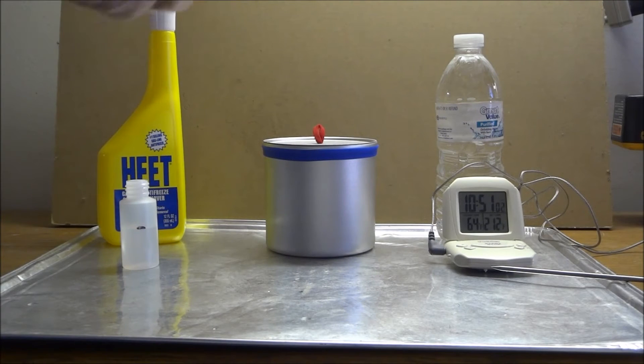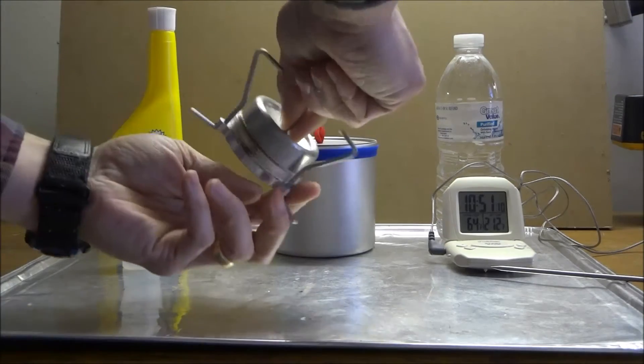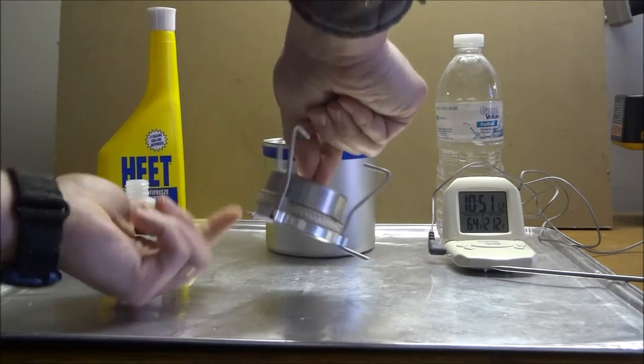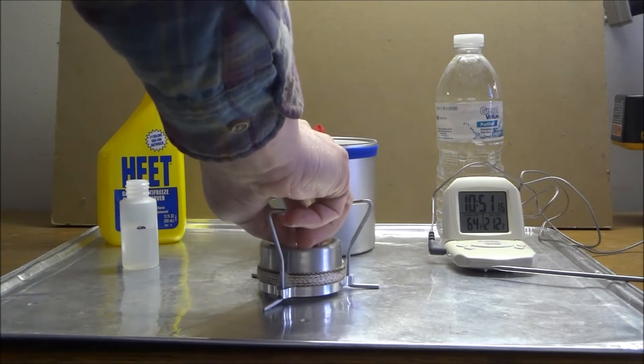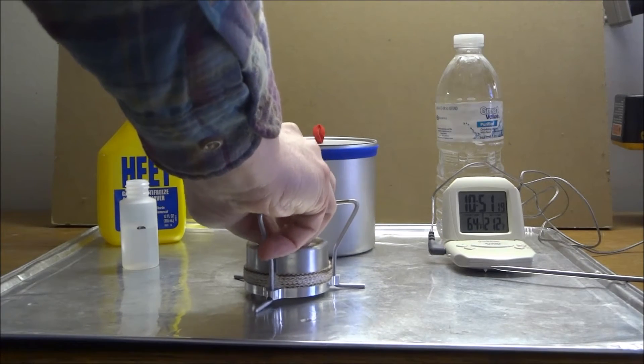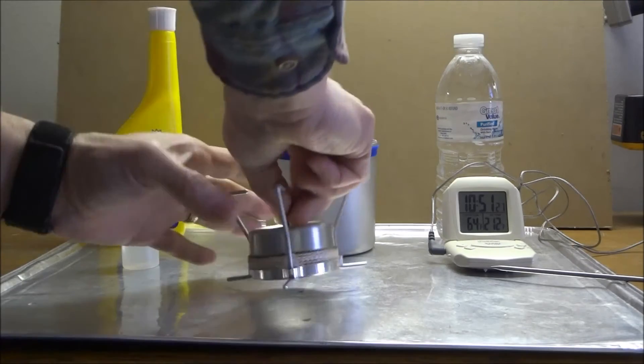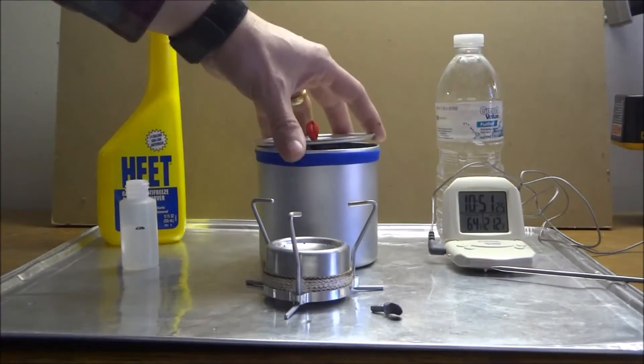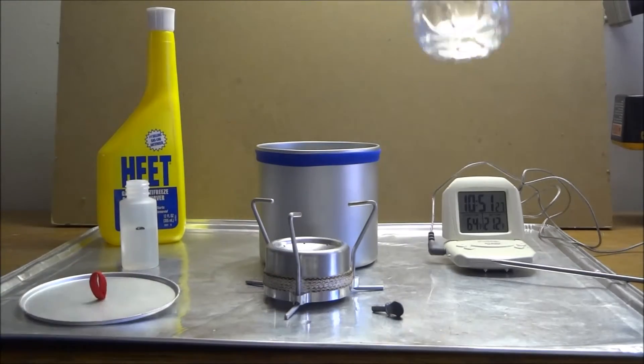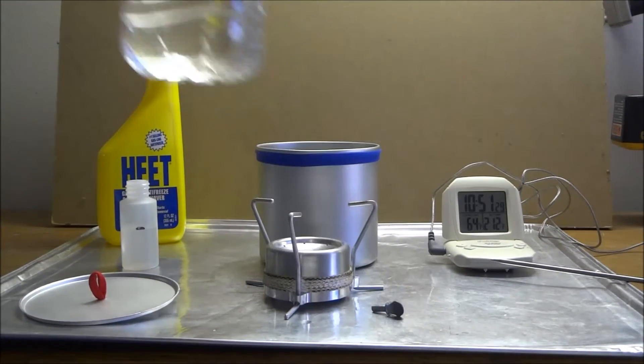And I wanted to just do a boil test on this and give you an idea of the performance on this stove. And what I'm going to be doing is using the 10 centimeter cook pot. And I've got just 20 ounces of water here.